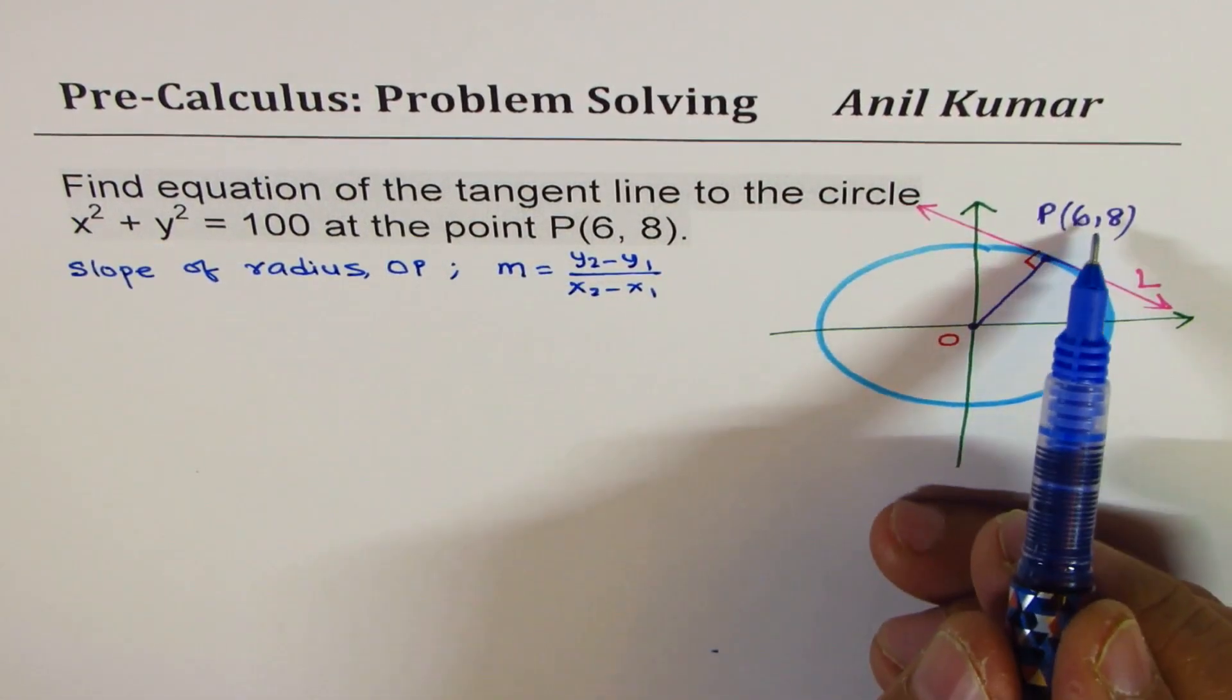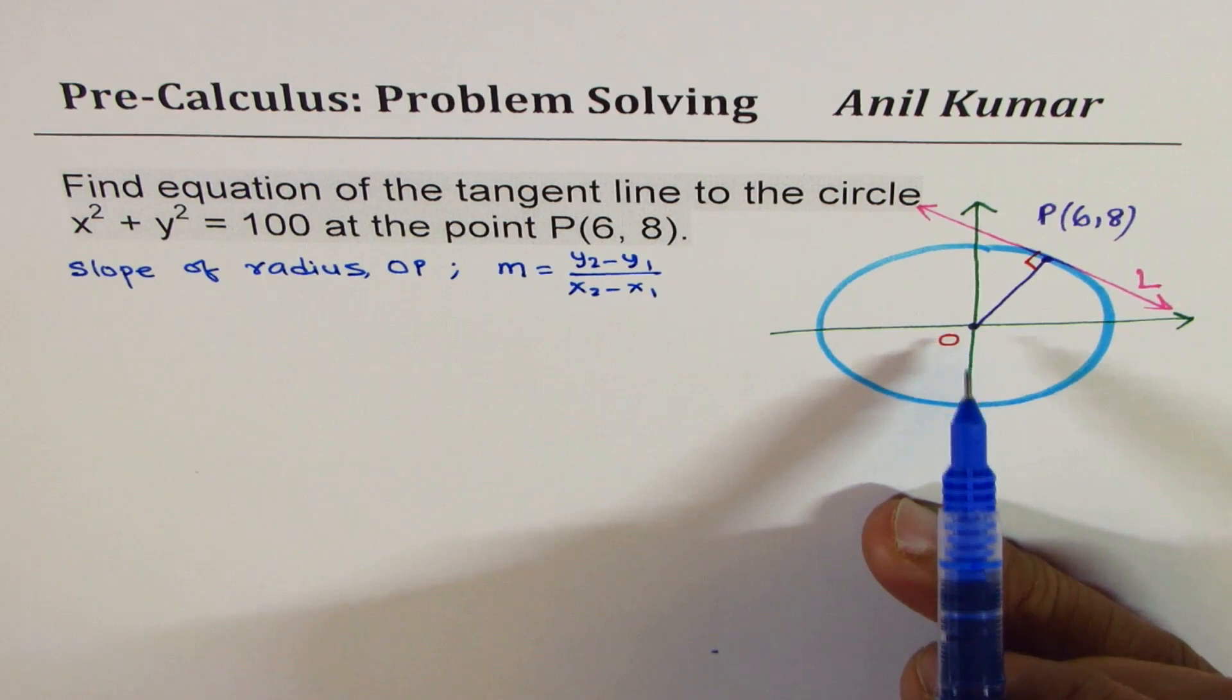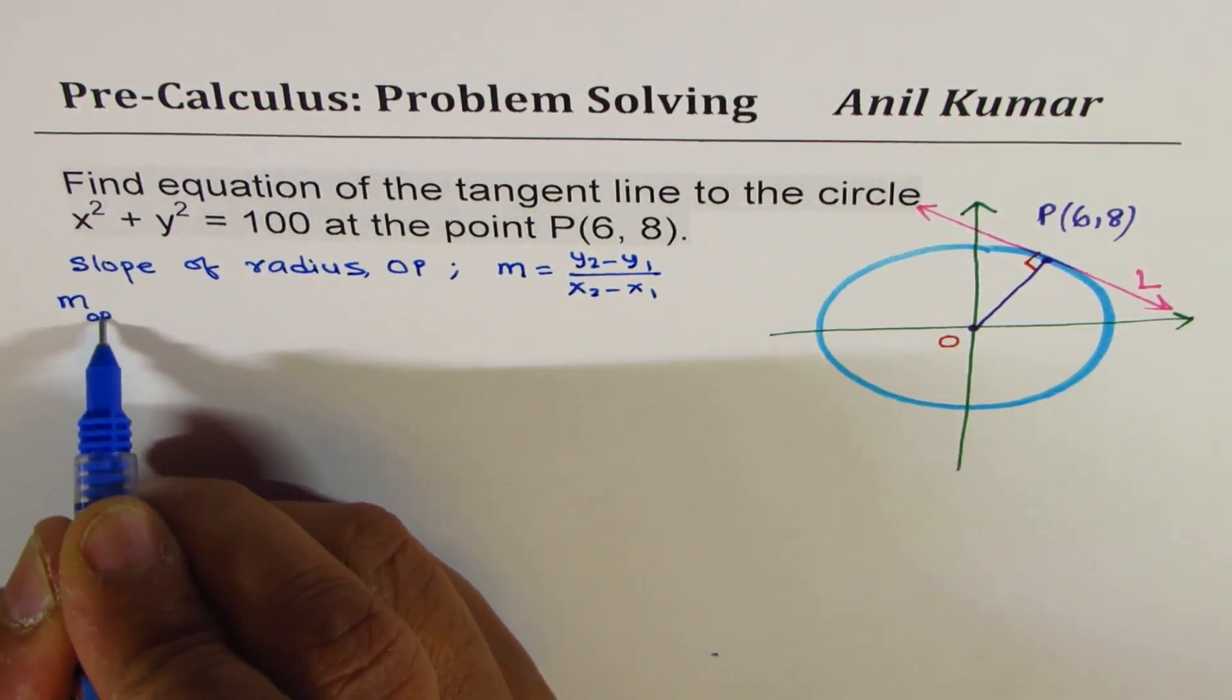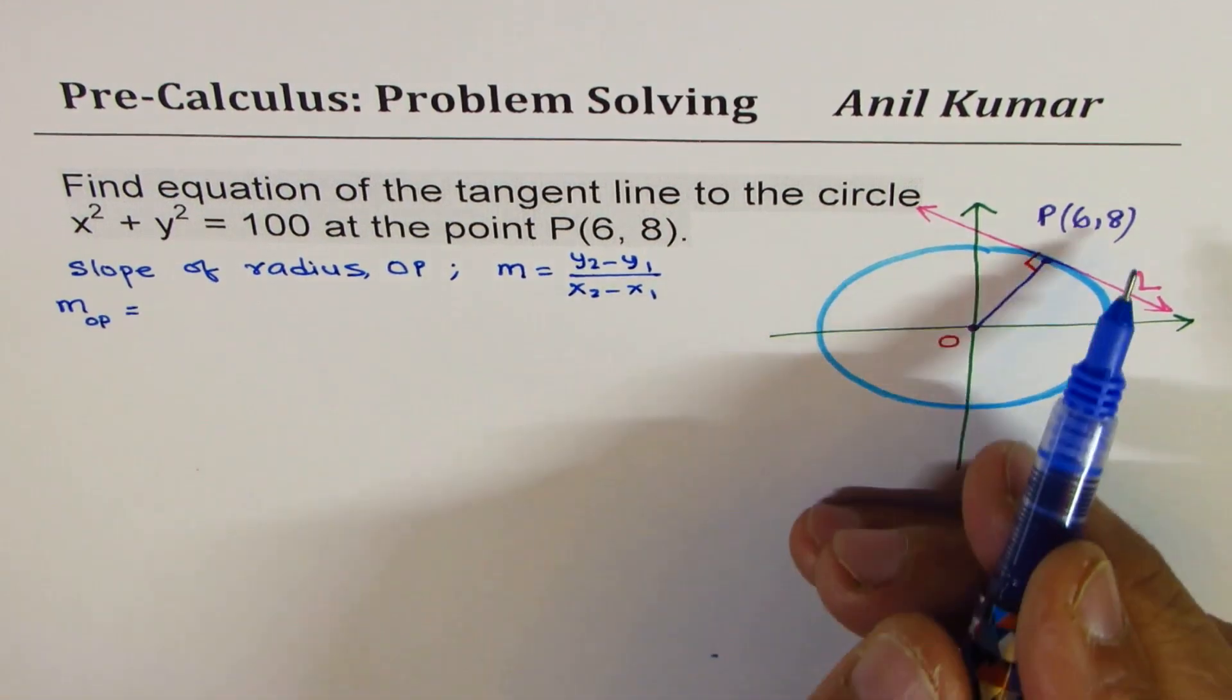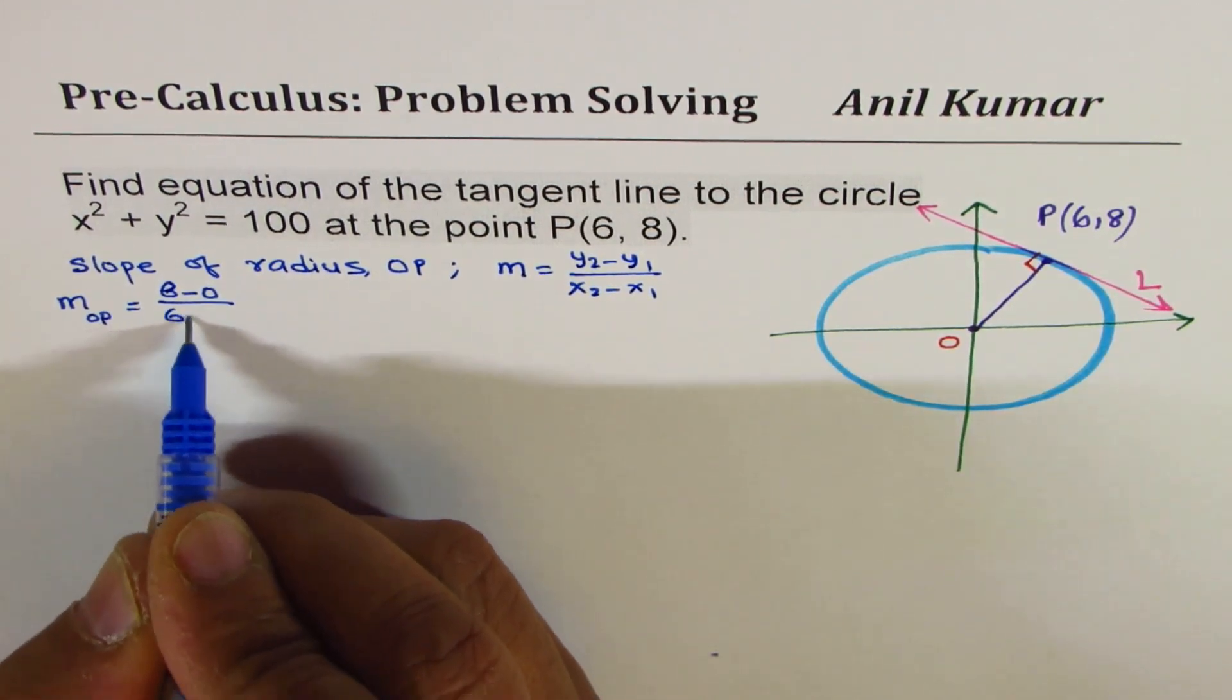And we can always use m equals y₂ minus y₁ divided by x₂ minus x₁. So one point is given to us. The other point is origin itself. So in our case, slope of OP is equal to 8 minus 0, let me write this.